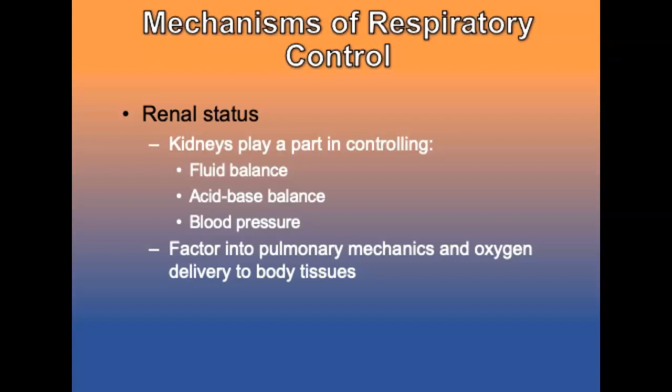The kidneys play a part in controlling fluid balance, acid-base balance, and blood pressure, which affect pulmonary mechanisms and delivery of oxygen to body tissues. Patients with severe kidney disease often present with respiratory signs and symptoms. Patients with CHF because of renal disease can be difficult to manage because diuresis may be difficult. Acid-base disturbances may cause hyperventilation that may be mistaken for respiratory disorders.